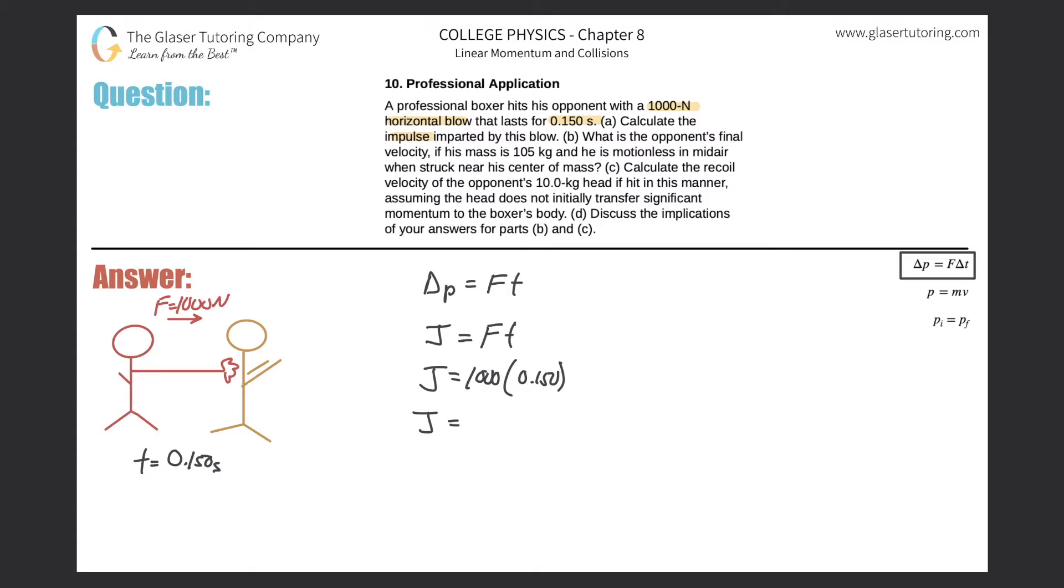We just simply have to do the multiplication here. The impulse will simply be 150. Plug it into the calculator and that impulse will be in Newton-seconds, but it's also the same thing as kilogram meter per second. That's the impulse. Remember, that's the same thing as the change in momentum.